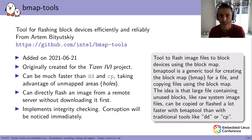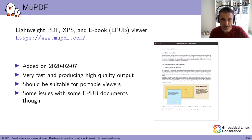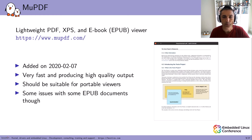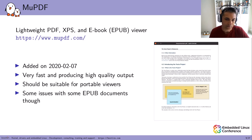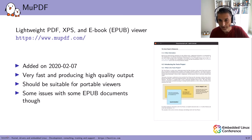The next one is MuPDF, a lightweight PDF, XPS, and eBook viewer for the EPUB format. It was added last year and is very fast and produces very high quality output. It should be suitable for portable viewers because it's very small too. I found some issues with some EPUB documents, but the PDF output was just great.